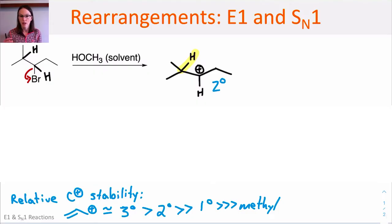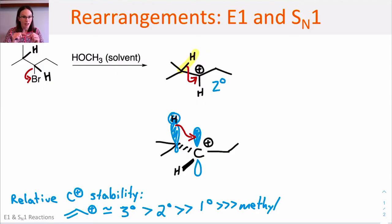For example, here the carbon-hydrogen bond will be attracted to the carbocation intermediate. If those orbitals overlap, that hydride—the hydrogen with its electrons—can shift right over to that carbocation, forming a new bond between the secondary carbon and hydrogen atom.